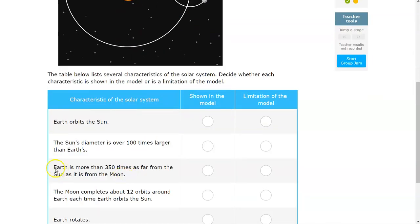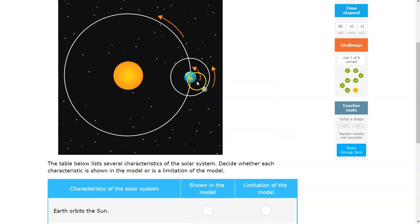Next question is, Earth is more than 350 times as far from the Sun as it is from the Moon. So if you look at the distance between the Earth and the Moon here and the Earth and the Sun there, does it seem 350 times further away for the Earth and the Sun compared to Earth and the Moon?